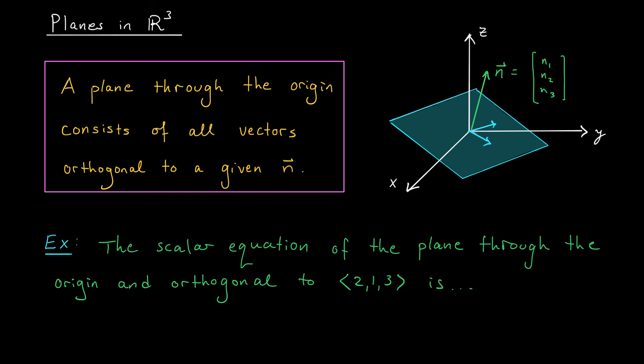This, folks, is the key observation that's going to allow us to write down the equation of a plane through the origin. A plane through the origin consists of all vectors that are orthogonal to some given vector N. We refer to this N as a normal vector for the plane. So, our equation is the set of all vectors XYZ such that N dot XYZ is equal to 0. If we expand this out using our definition of dot product, we're looking for all XYZ such that N1X plus N2Y plus N3Z is equal to 0. We refer to this as the scalar equation for our plane.